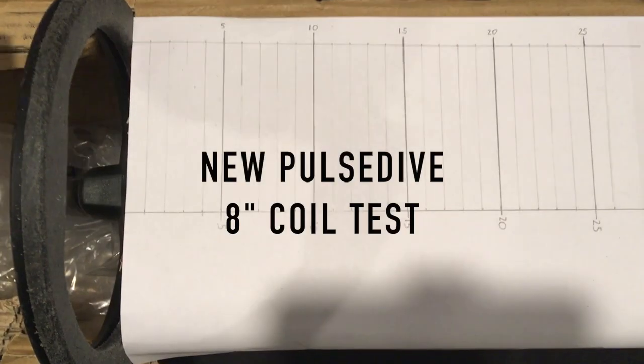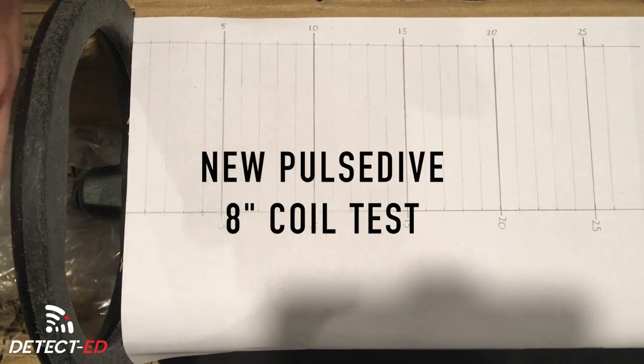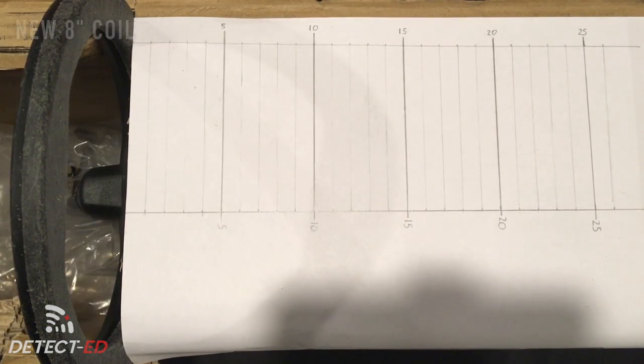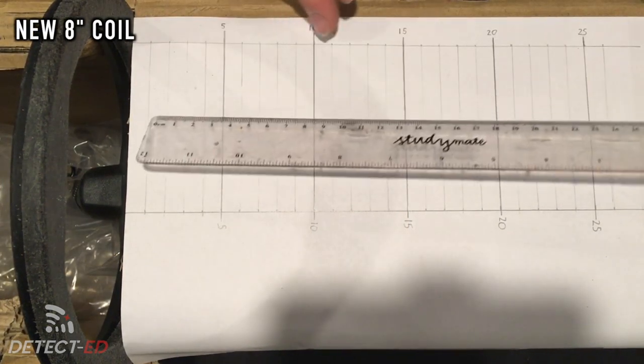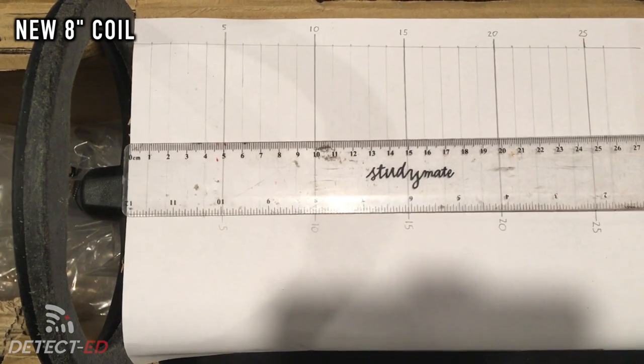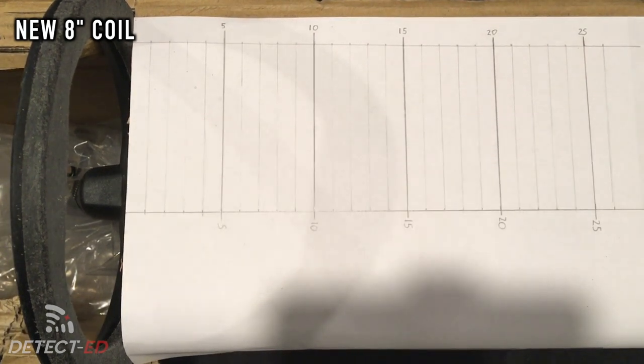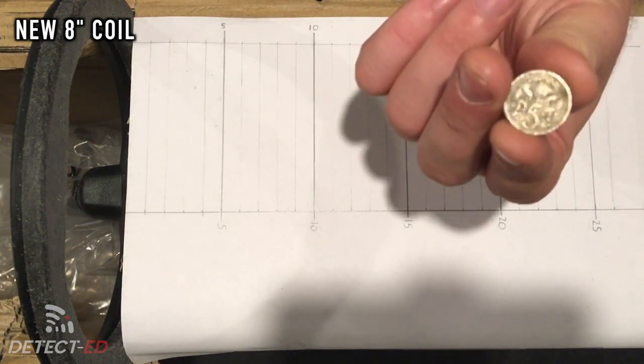Okay, we've got the 8-inch coil mounted on the Pulse Dive in the box perfectly vertical. We've got this measurement set out here with a ruler so you can see those are legit numbers. We're going to test some common Australian items.